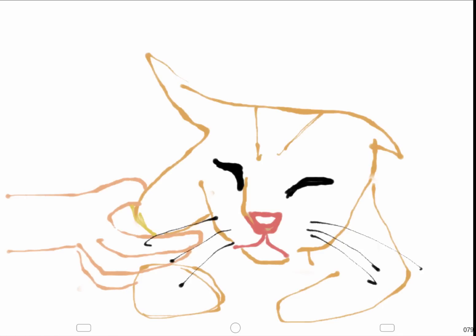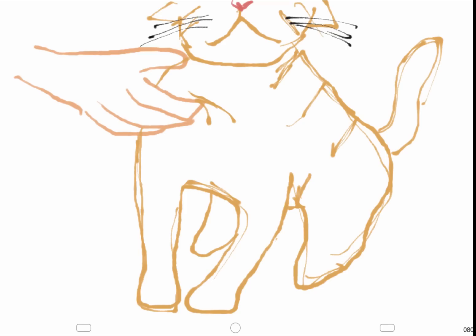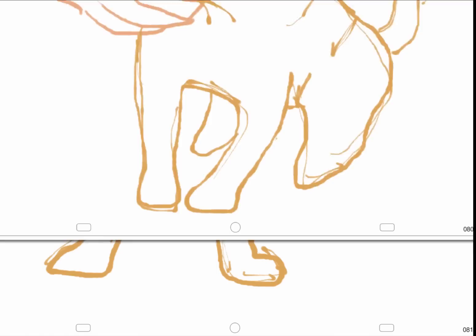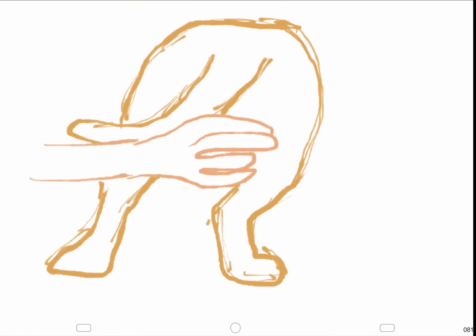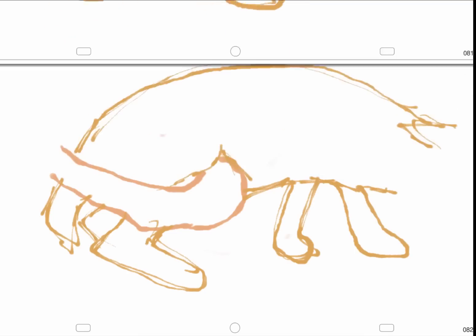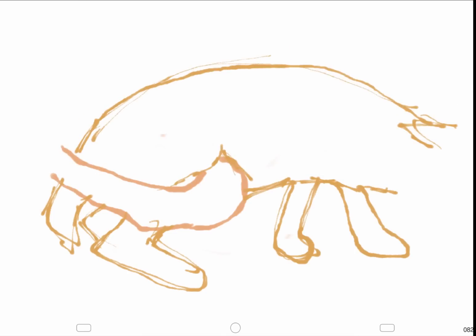Similar to the dog, the submandibular lymph node can be palpated at the ramus of the mandible by sifting through the subcutaneous tissue. It is common practice to palpate the prescapular lymph nodes in the region of the remnant clavicle. The popliteal lymph node can be found in the thigh niche between the bellies of the gastrocnemius. The inguinal lymph node and axillary lymph node should also be palpated but should not be felt in the healthy cat.